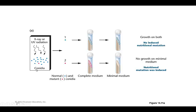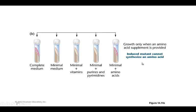What they did first was take their mold and expose it to either X-ray or UV irradiation to cause mutations. In most cells, it was able to grow on both complete medium and minimal medium — no mutations induced. However, they expected that many cells would have mutations, so they would be able to grow on complete medium but not on minimal medium. To find out what was lacking, they added vitamins — no growth; nucleotides such as purines and pyrimidines — no growth; then amino acids — and now it could grow. So the mutant was only able to grow when the amino acid supplement was added.